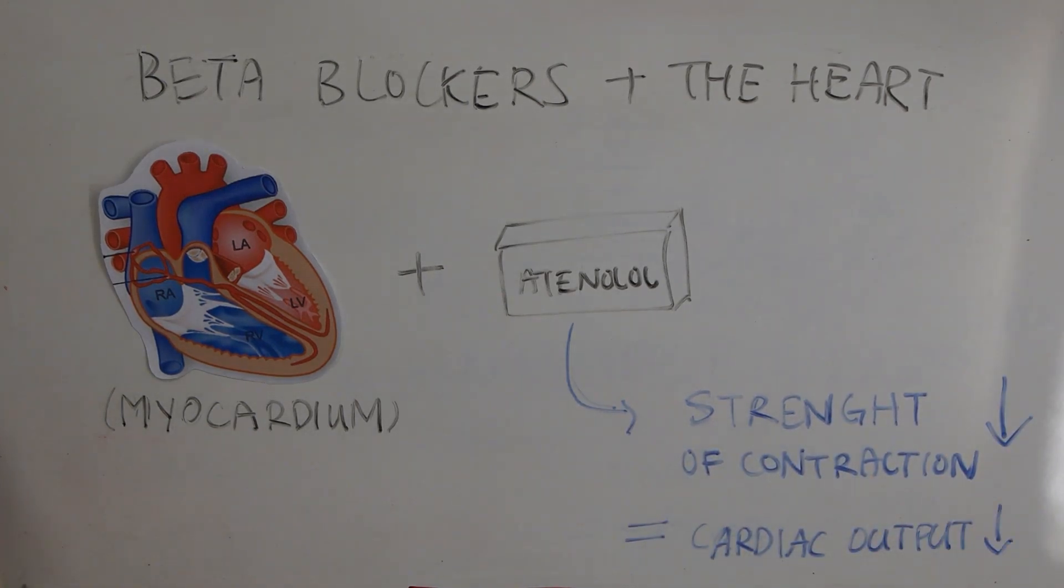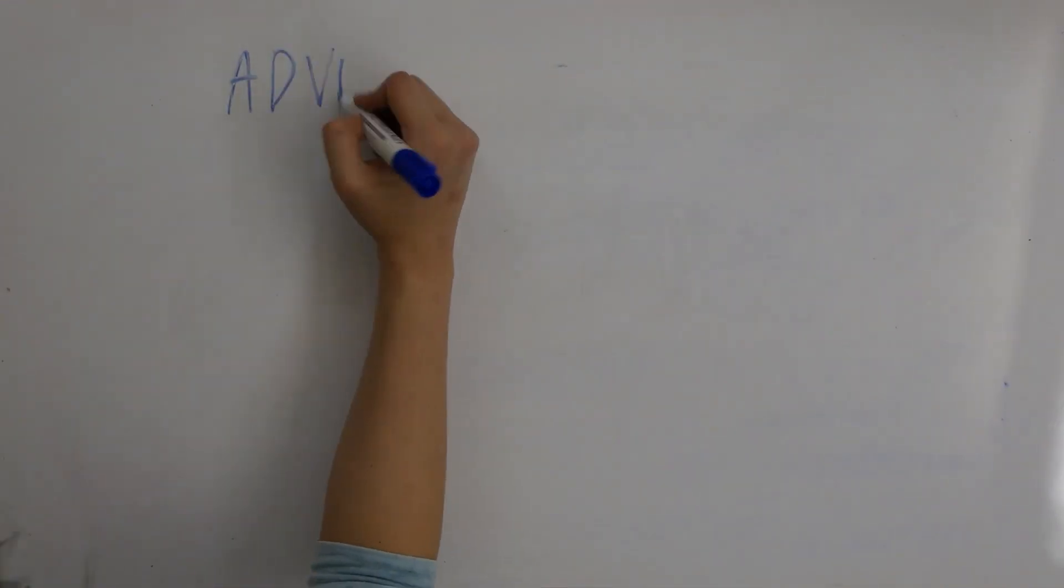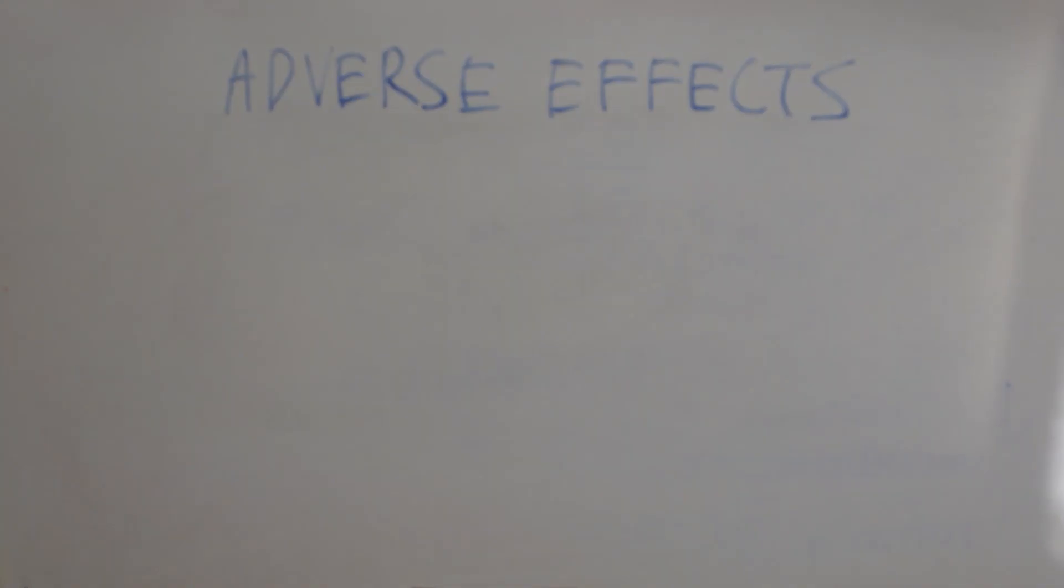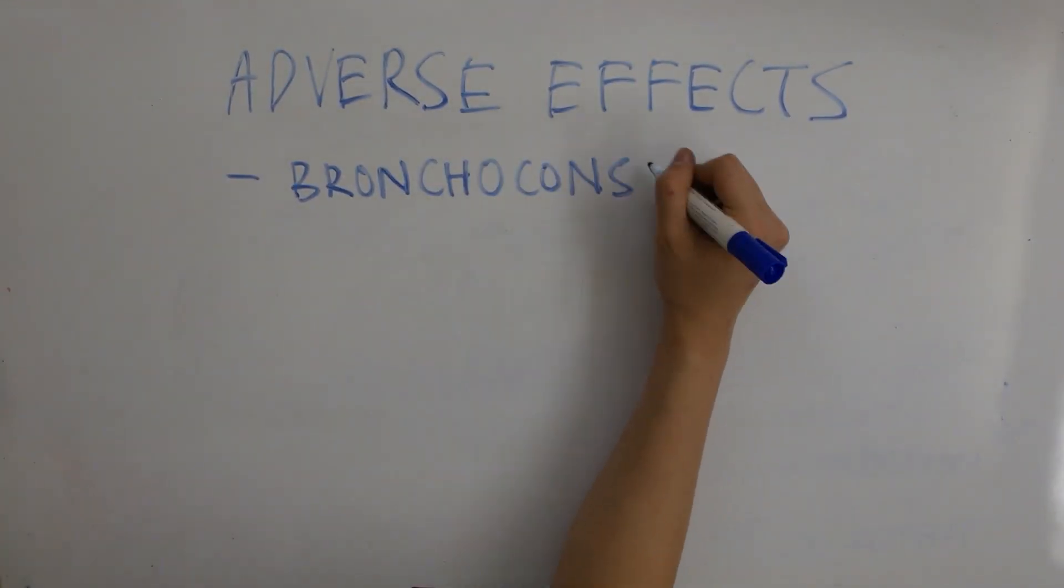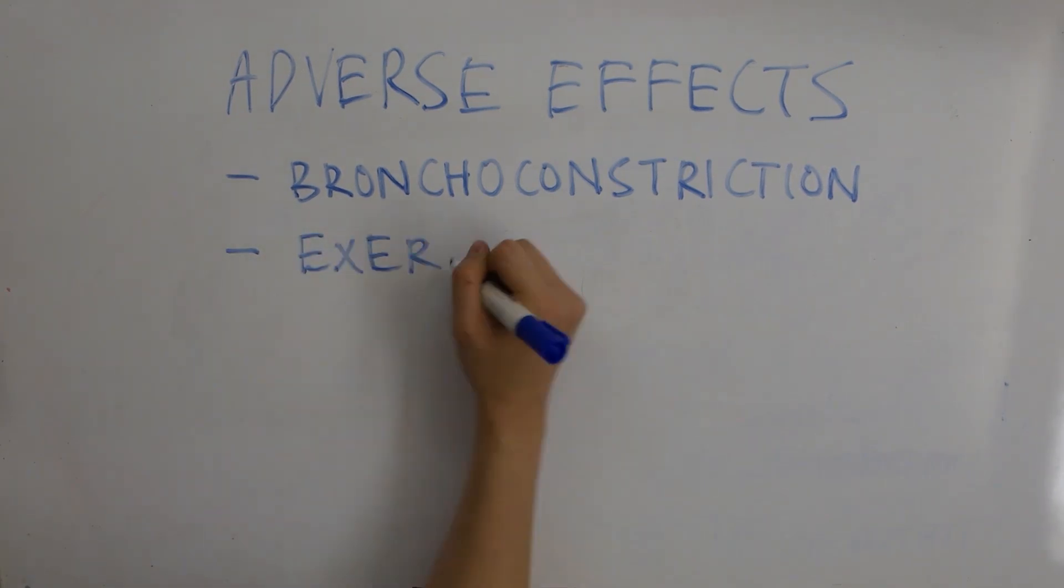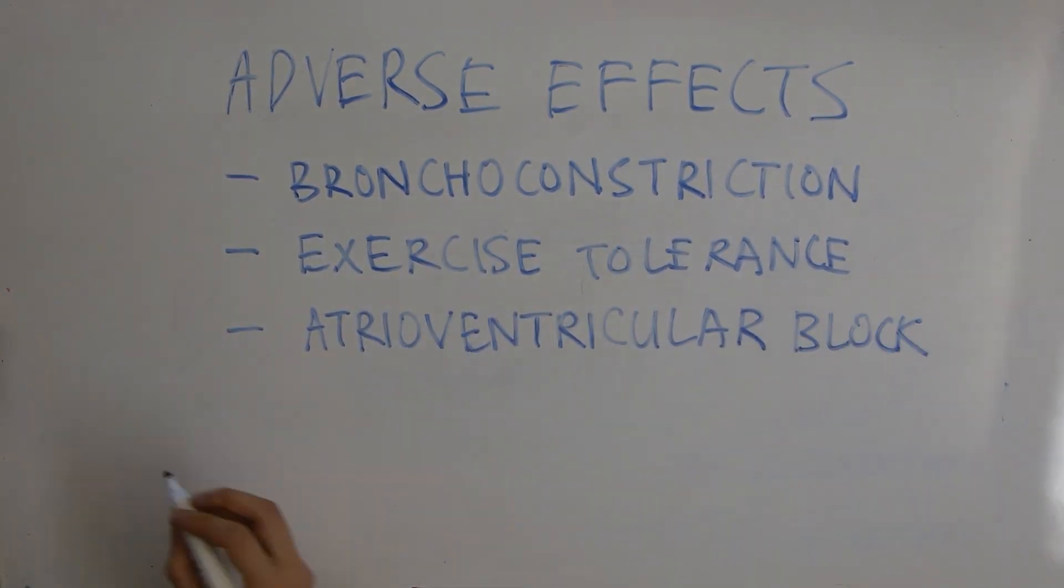Both of these mechanisms are used in the regulation of blood pressure and can be manipulated through the use of beta blockers to reduce hypertension. The adverse effects of beta blockers include bronchoconstriction, exercise tolerance, atrioventricular block, claudication, and sleep disorders.